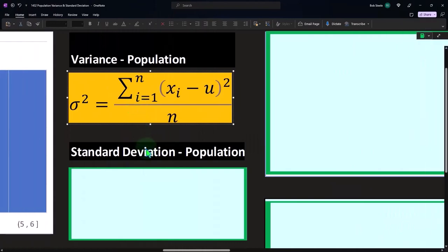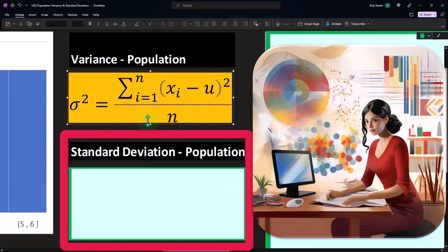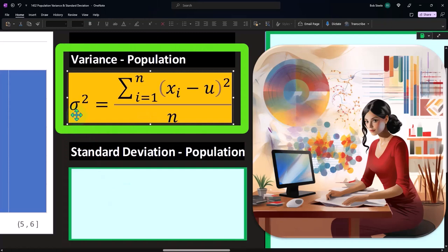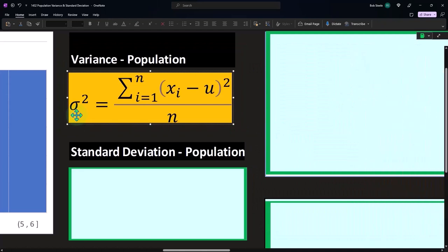If you're getting to the standard deviation, you're going to do the variance first. It's part of the steps. Notice that the variance is calculated with sigma squared, and the standard deviation will often be represented by just sigma.